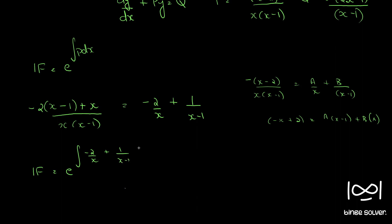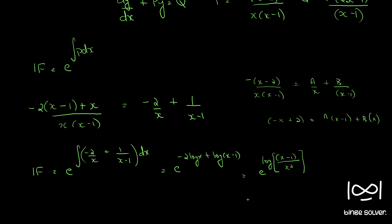So the integrating factor becomes e raised to the integral of [minus 2/x plus 1/(x minus 1)] dx, which gives e raised to [minus 2 log x plus log(x minus 1)]. Applying logarithm properties, this simplifies to e raised to log[(x minus 1)/x squared], so the integrating factor is (x minus 1)/x squared.